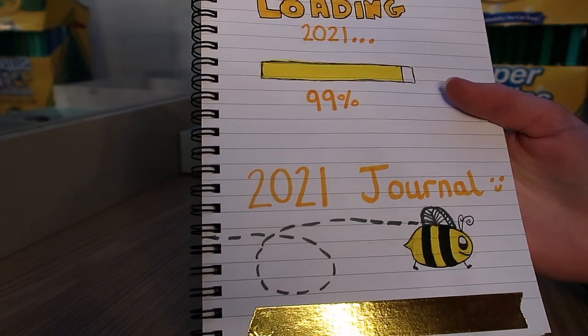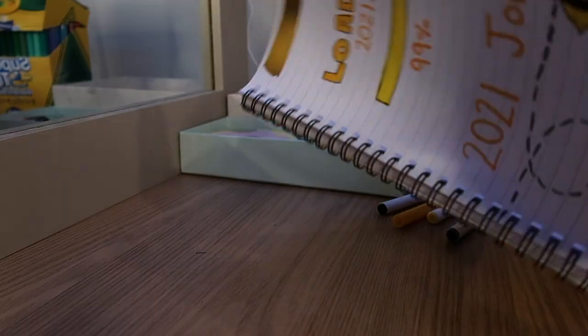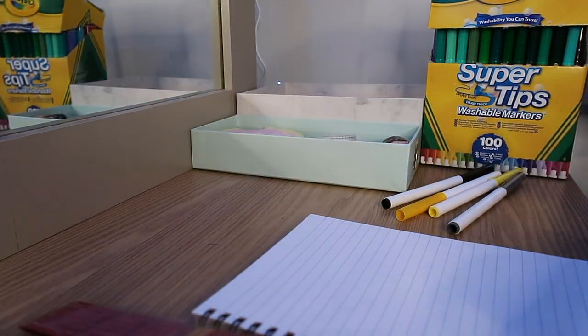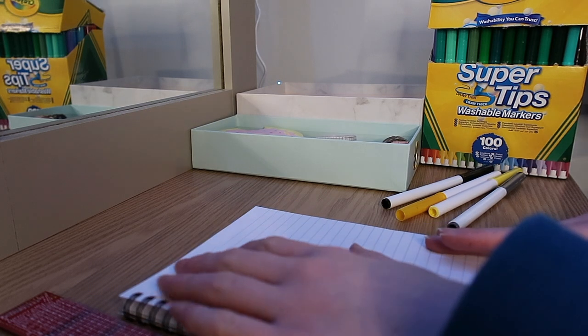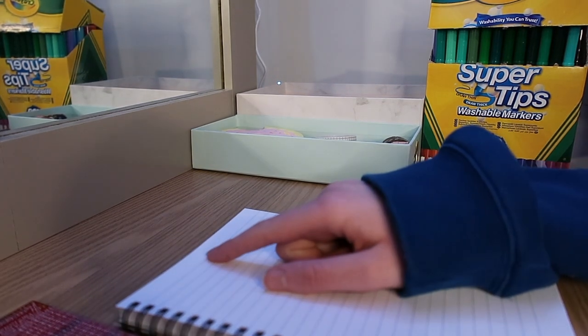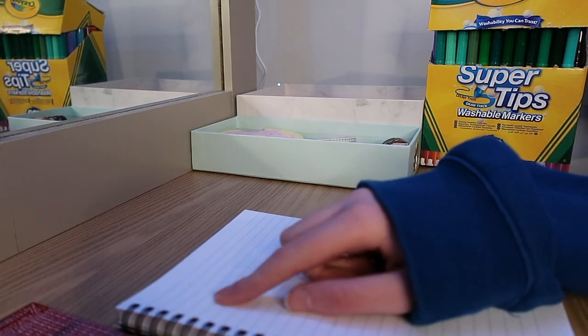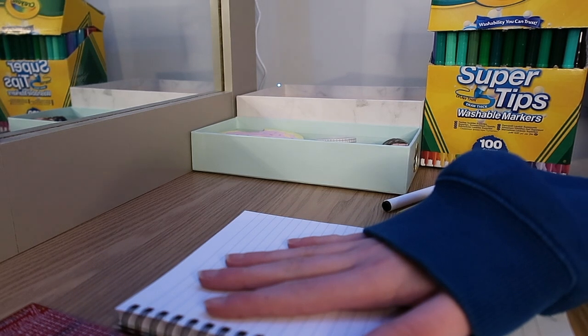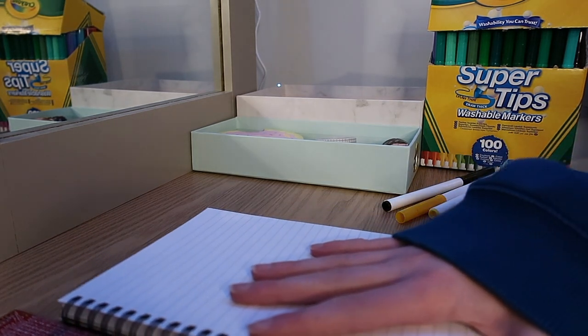Okay, I just got my ruler and the next page is going to be the year in pixels page. I'm just going to draw out a giant grid down the side of the page, and every single day of the year I'll be coloring in a little pixel to represent my mood. Let's get straight into it. I think this page is definitely going to be the hardest out of them all.